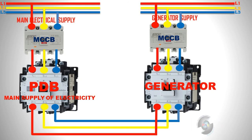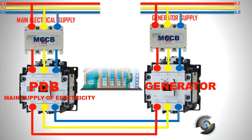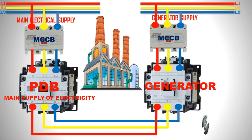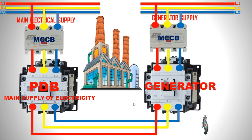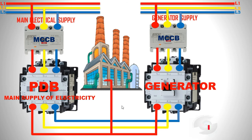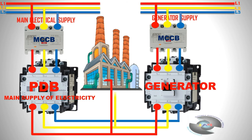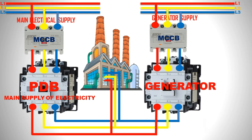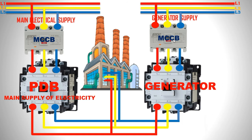Now completing our generator and PDB system connections. Generator supply is okay and PDB supply is okay. The output is connected to its destination — a factory, residential area, or any load. The R-phase is directly connected to the LT panel of the industry, any kind of factory, residential area, or building resource. The MCCB for the main electrical supply and the generator supply connected via the generator MCCB and generator magnetic contactor are now complete.